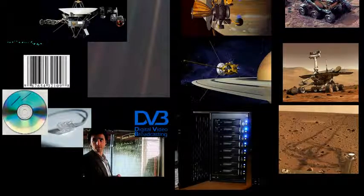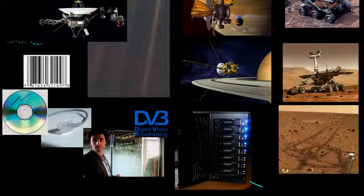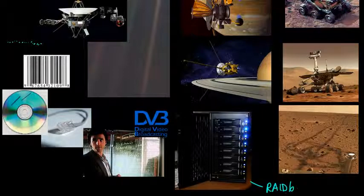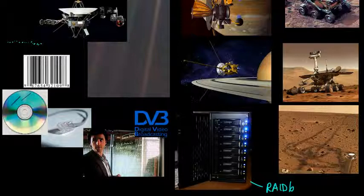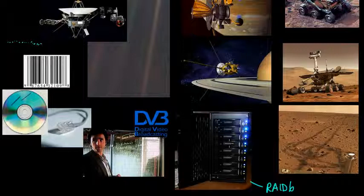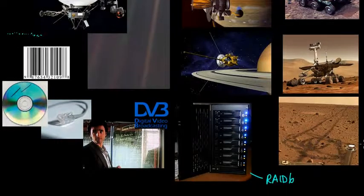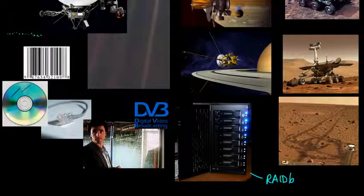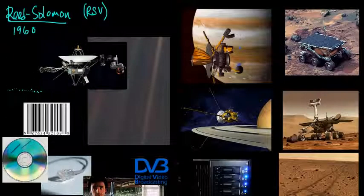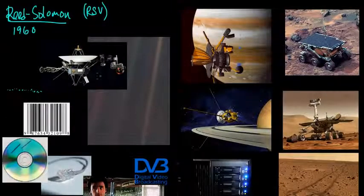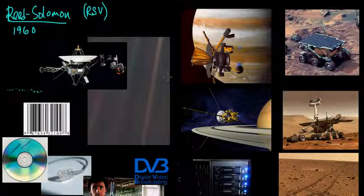So we saw that Hamming was used in RAID 2, and Reed-Solomon is used in RAID 6. You have a bunch of hard disks with information stored with redundancy so you can recover your data if bad things happen to some disks. And some really cool applications of Reed-Solomon codes are in space exploration — all of the following space exploration missions used Reed-Solomon codes.